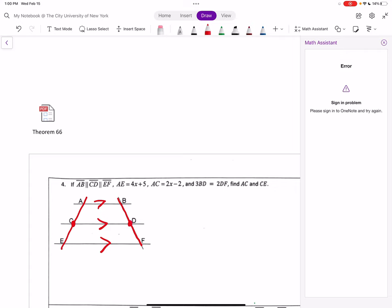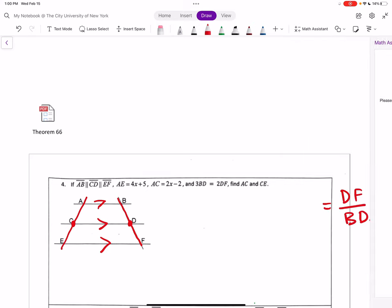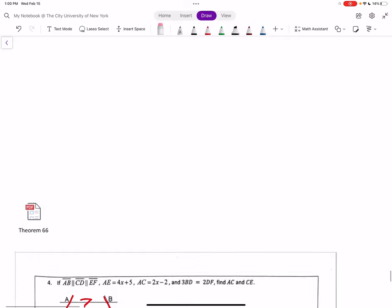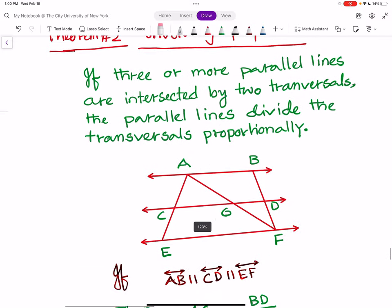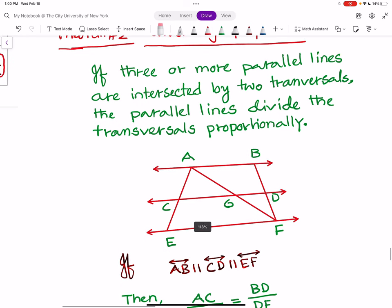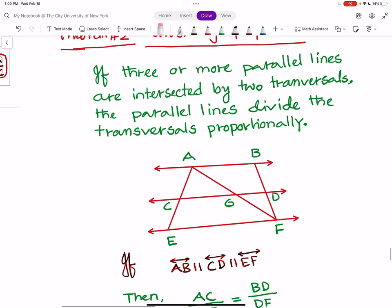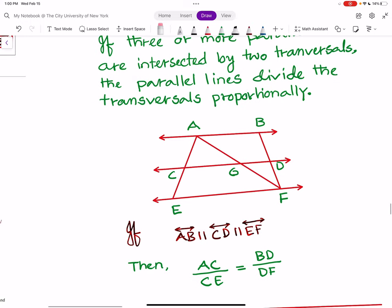Now this CD is intersecting the transversal at C and D. So we have a theorem related to that. In your textbook, you could see that. However, the theorem that we have learned in the classroom is this: if three or more parallel lines are intersected by the transversal, the parallel lines divide the transversal proportionally. So they are talking about this AC and CE and this BD and DF in proportion.